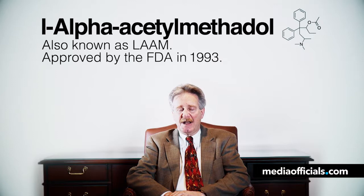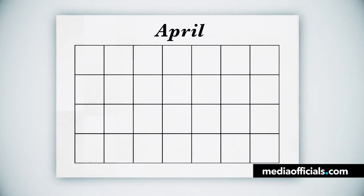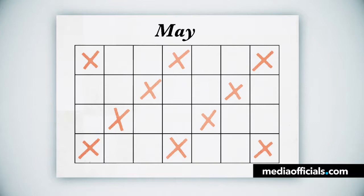The next drug to come about was L-alpha-acetylmethadol. This was a longer-acting version of methadone in the sense that it had two active metabolites that stayed around even longer. So you can imagine an individual could take L-alpha-acetylmethadol every other day, or in fact every third day.